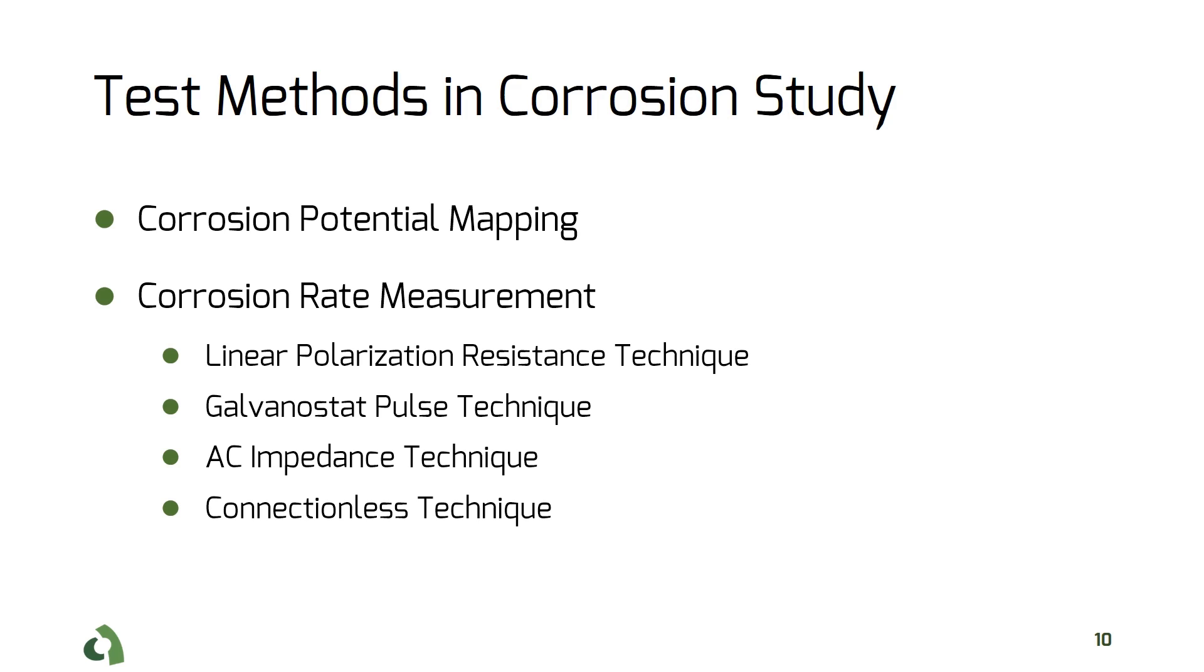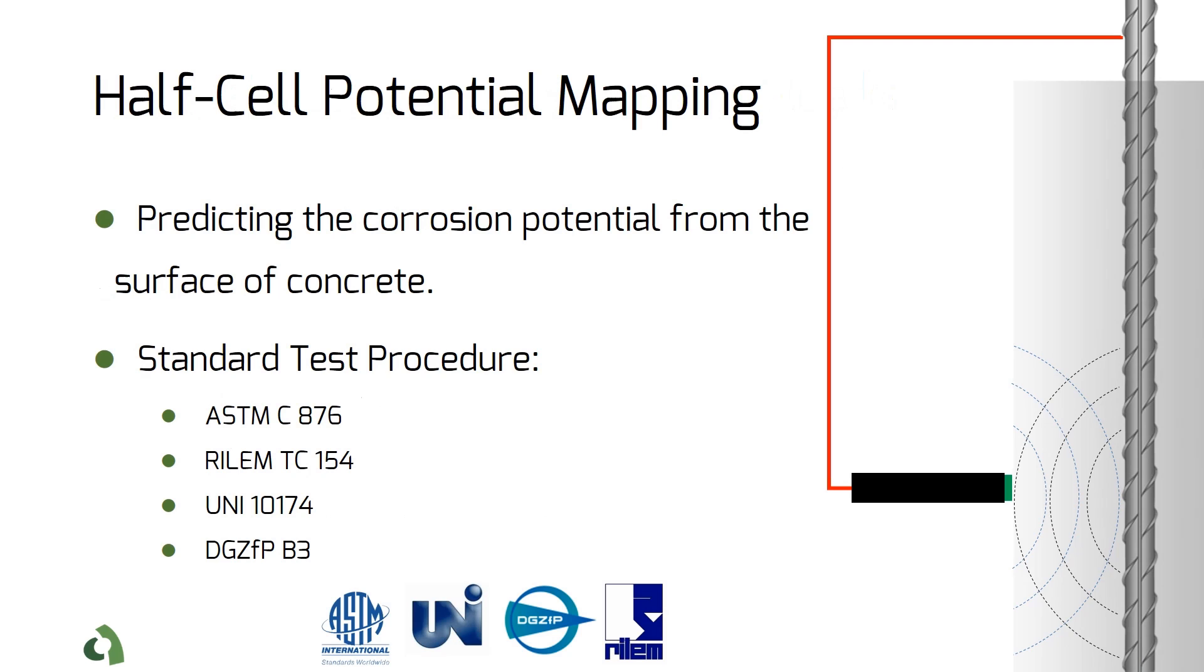So let's talk a little about these concepts and measurement test methods. The half-cell test can be used to predict the corrosion potential from the surface of concrete. Several associations have standardized the test procedure, including ASTM, UNI, and RILEM.